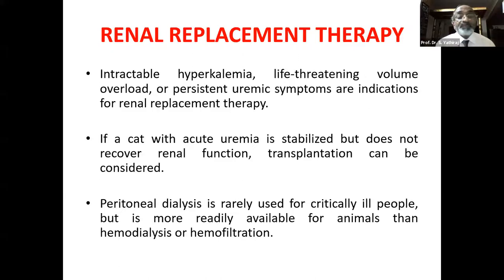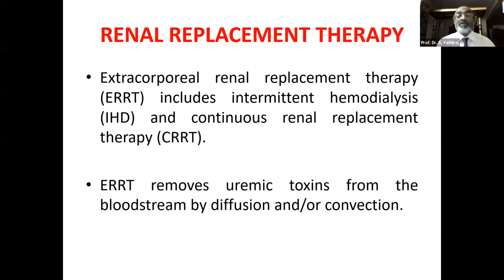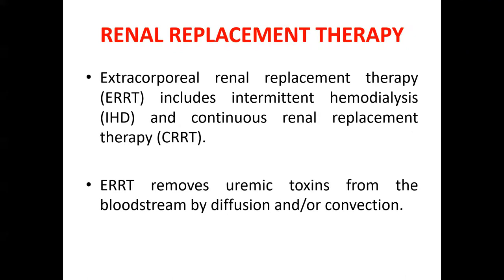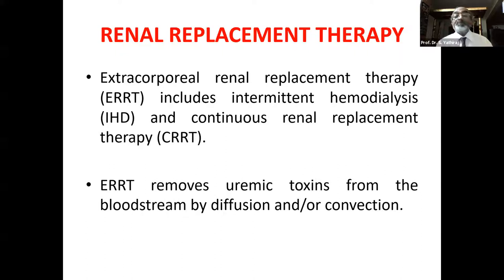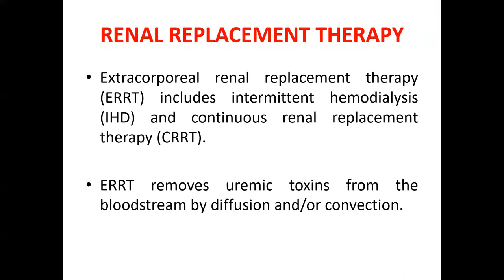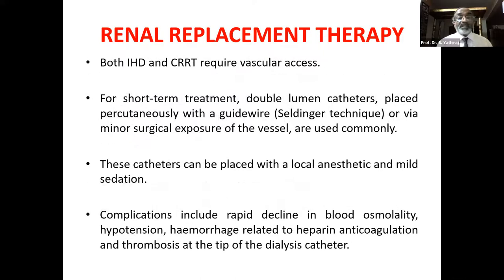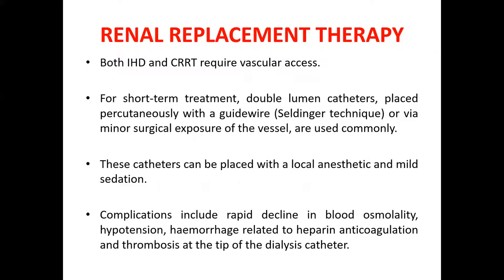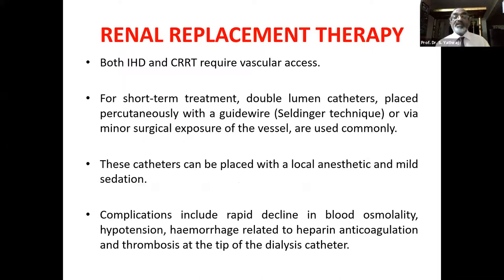GI complications — anorexia, nausea, vomiting — can be treated with histamine blockers. Antiemetics are frequently needed. Gastric protectants like sucralfate may also be administered. Medicines available: famotidine, ranitidine, omeprazole, pantoprazole, metoclopramide, sucralfate, misoprostol. Currently, maropitant at 1 mg/kg and ondansetron at 0.1 mg/kg every 12 to 24 hours are popular choices to prevent nausea and vomiting.